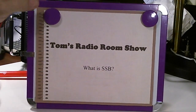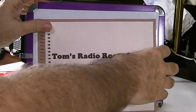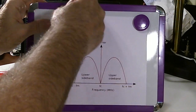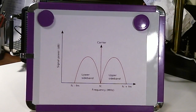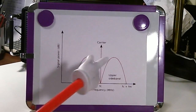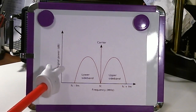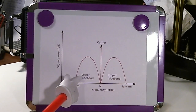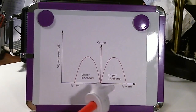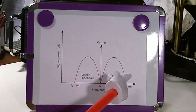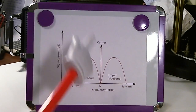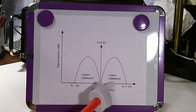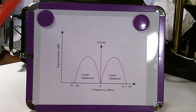Let's look at the AM amplitude modulated signal. Here's a very simple diagram showing signal power or signal strength on one axis and frequency on the other. You've got the carrier, a lower sideband, and an upper sideband — so with AM modulation you get all of this, and as you can see it takes a lot of bandwidth. If you could remove the carrier and remove one of these sidebands, the signal bandwidth would be much smaller.